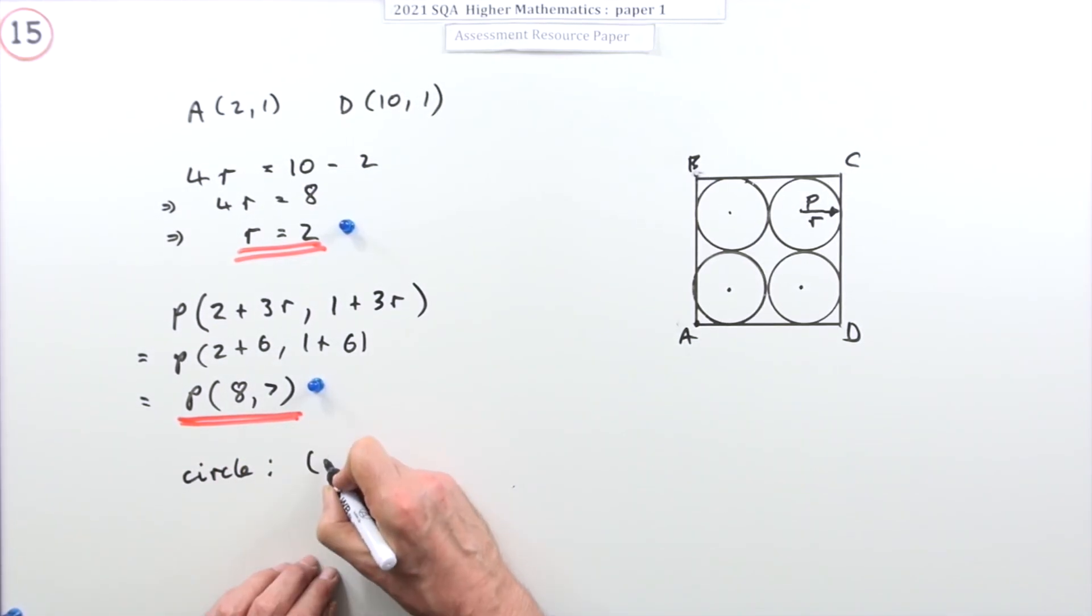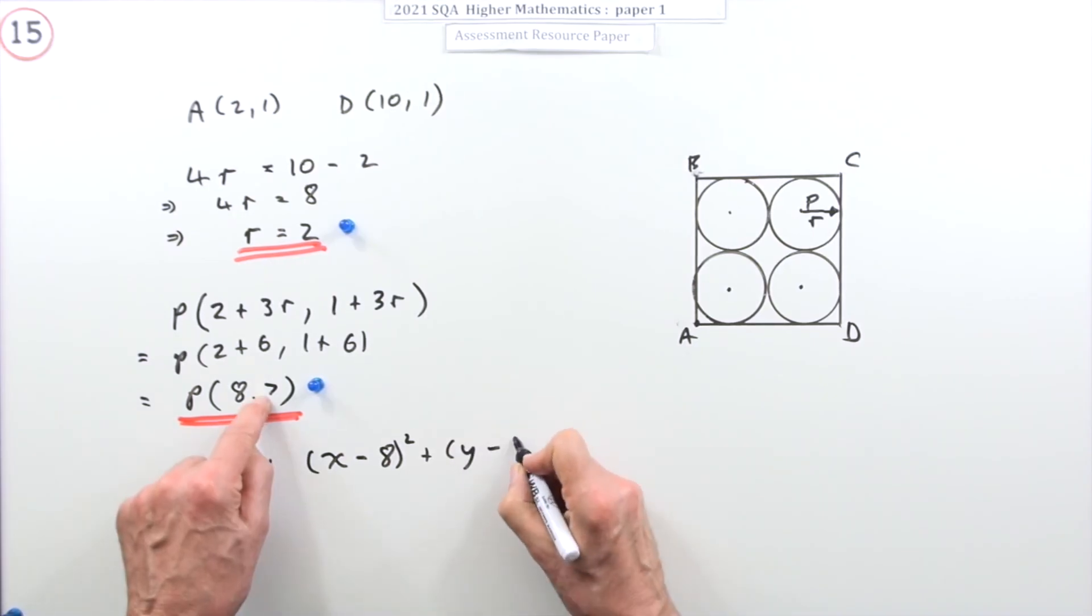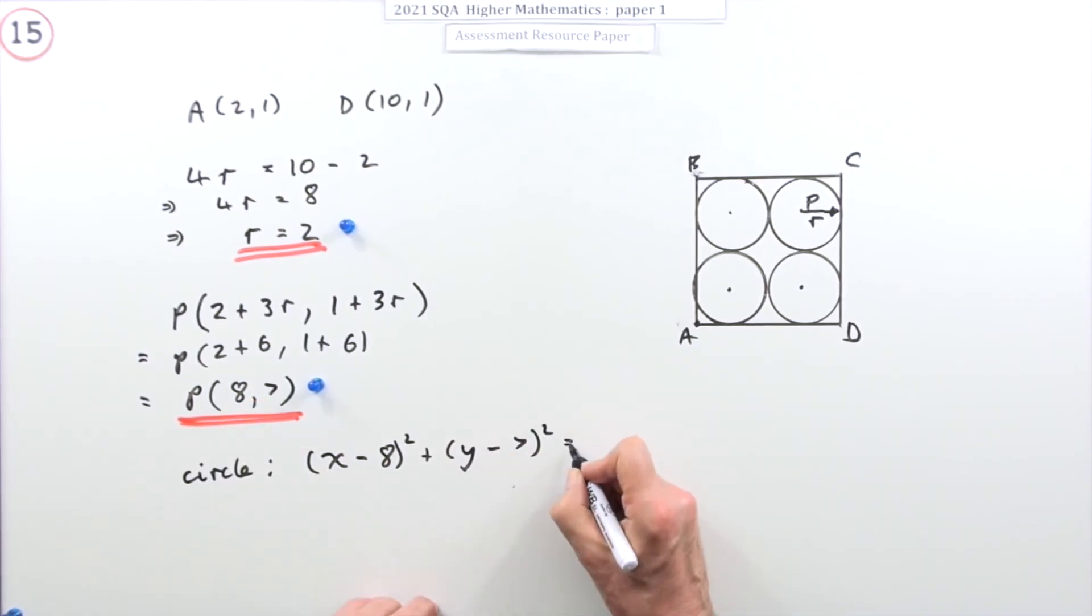You know the form of the equation of a circle. x minus the x-coordinate of the center, y minus the y-coordinate of the center equals the square of the radius.